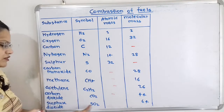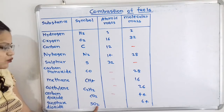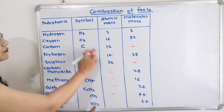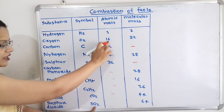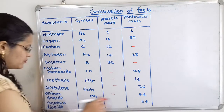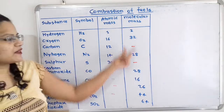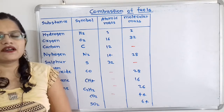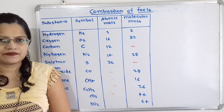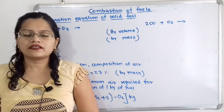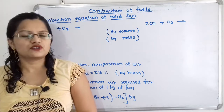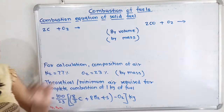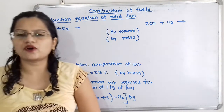Sulphur dioxide has one sulphur (32) plus two oxygen atoms (32), giving molecular mass 64. This atomic mass and molecular mass is important to study the chemical combination of fuel with oxygen. There are two types of fuel: solid fuel and gaseous fuel. Let us first understand the combustion equation of solid fuel.